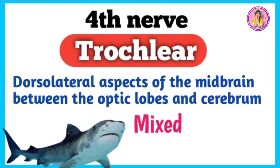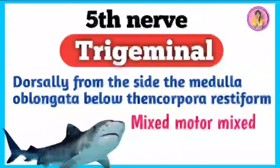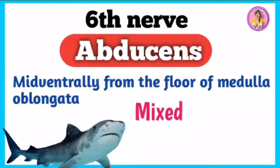The fourth nerve is trochlear. Its origin is the dorsolateral aspect of the midbrain between the optic lobe and cerebrum, and its physiological nature is mixed. The fifth nerve is trigeminal. Its origin is dorsally from the side of the medulla oblongata below the corpora restiformia, and its physiological nature is mixed. The sixth nerve is abducens. Its origin is mid-ventrally from the floor of the medulla oblongata, and its physiological nature is mixed.